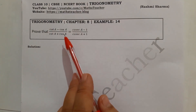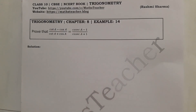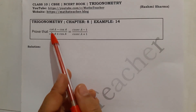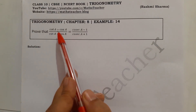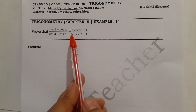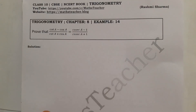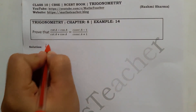It is important that you solve examples 13, 14, and 15 because this will clear your concept about which questions come in the exam and which way to solve them. The question is: prove that the left hand side equals the right hand side. You can solve both sides — left and right — and here we will start from the left hand side.